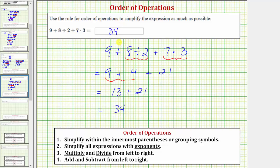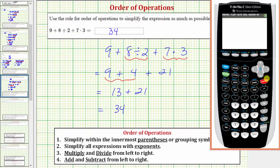Let's also verify this on the graphing calculator. To verify this on the calculator we simply enter the original expression. So we have nine plus eight divided by two plus seven times three and then enter. Notice how this does verify our work is correct.